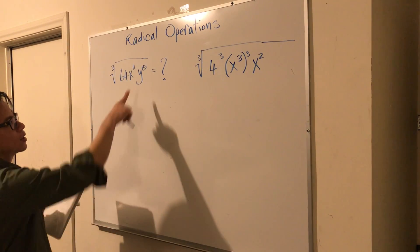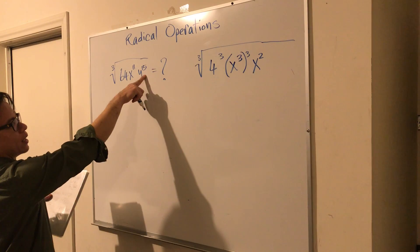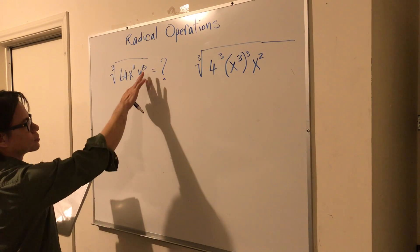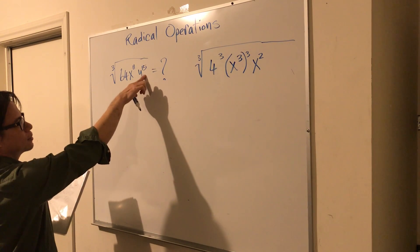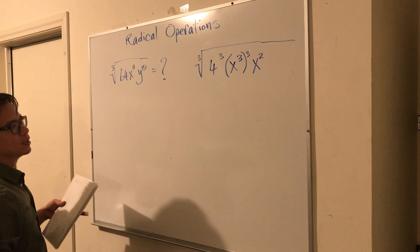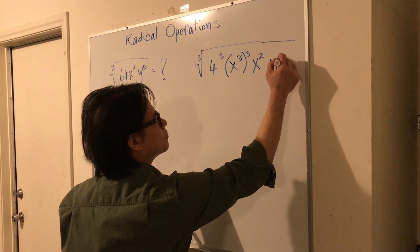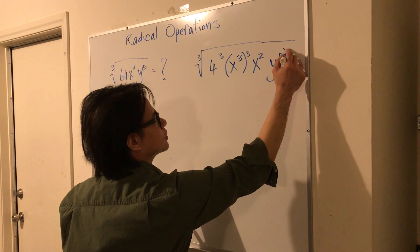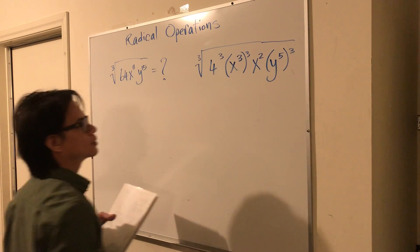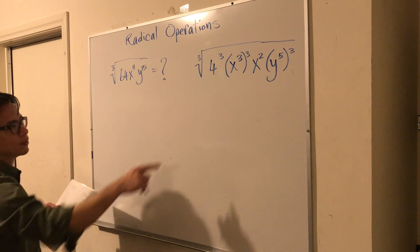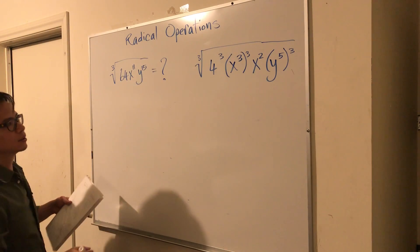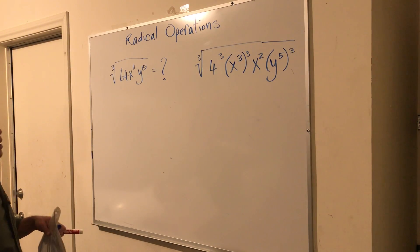So what can you divide y to the fifth power? So if you say y to the fifth power to the third, you are correct, because 5 times 3 is 15.